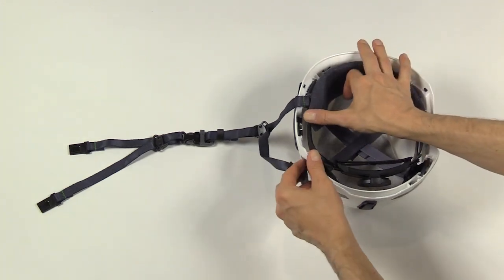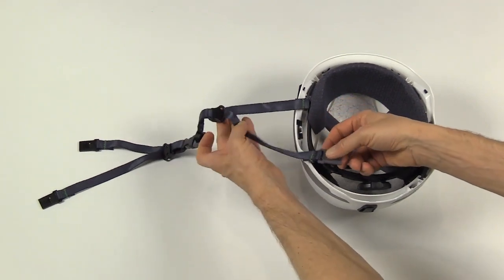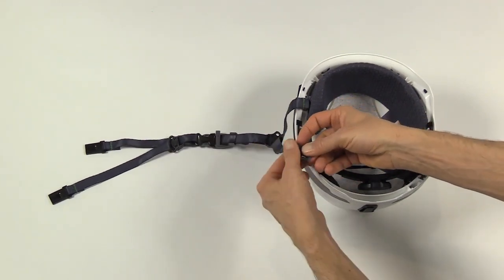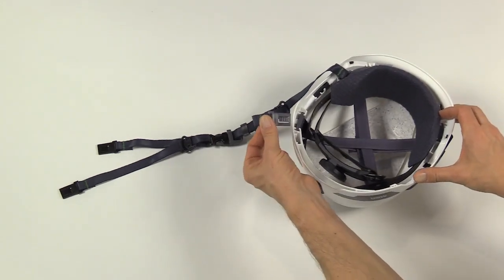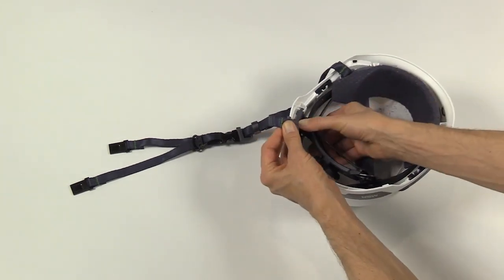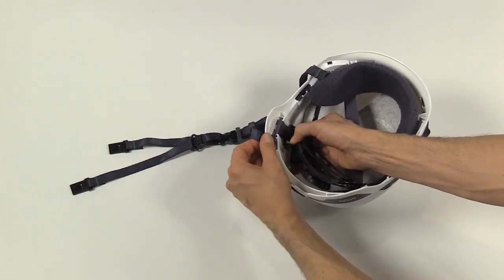After you do the left front, do the left rear. Again, ensure that the chin strap is flat and not twisted, and that the front of the clip faces the interior of the helmet when you click it in.